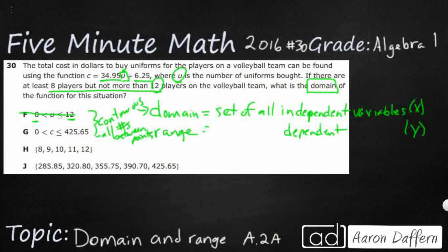And then we've got between 0 and 425.65. Once again, that 0 is going to be wrong. There has to be at least 8, but what this is, is this is actually calculating the range.